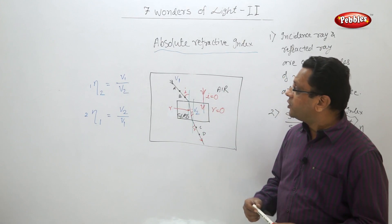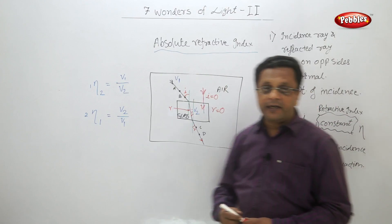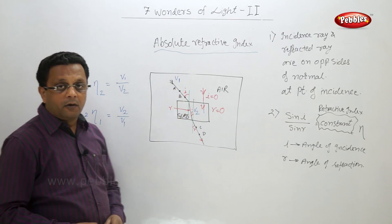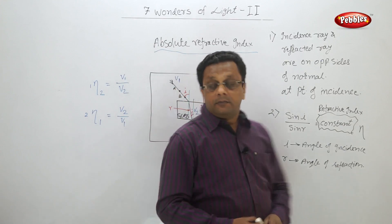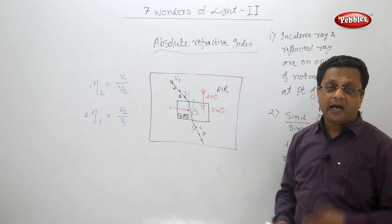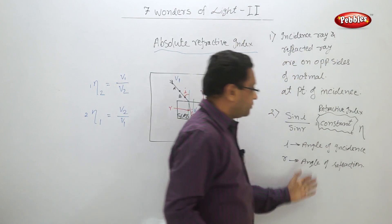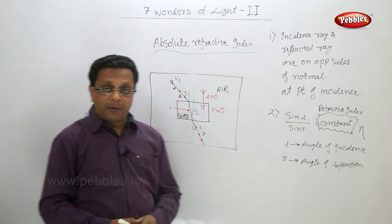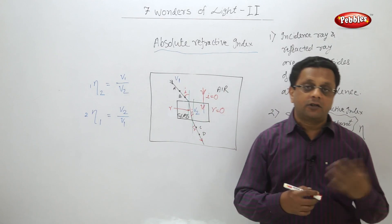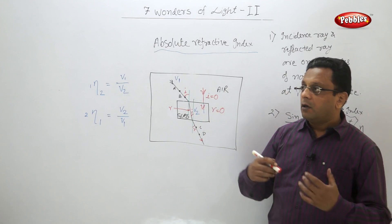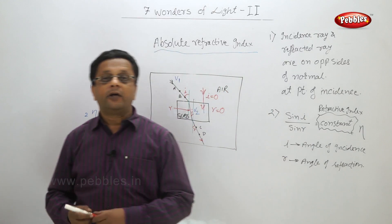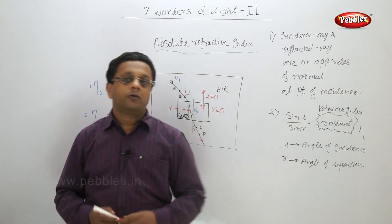So here we finish the topics of refraction: what is refraction, what is sin R, what is sin I, what is eta (refractive index), what is absolute refractive index, and the laws of refraction. Let us move to the next topic — how this refractive index affects our eyesight, or how it creates illusion in our day-to-day life.